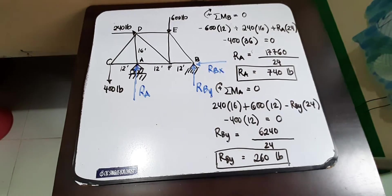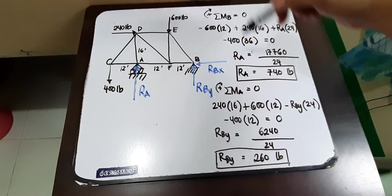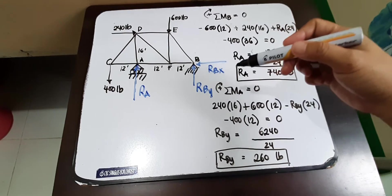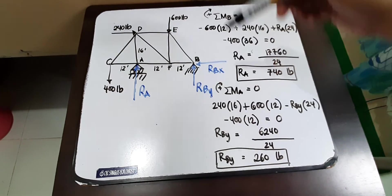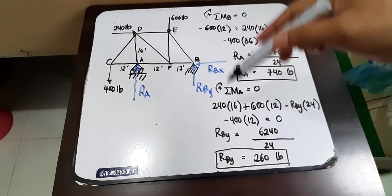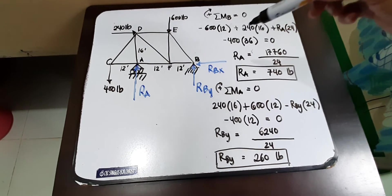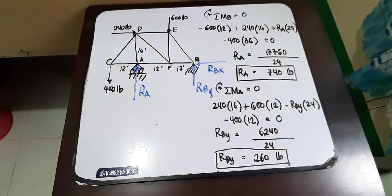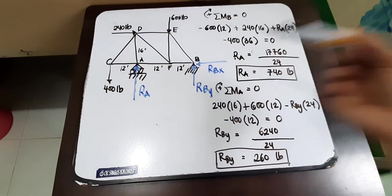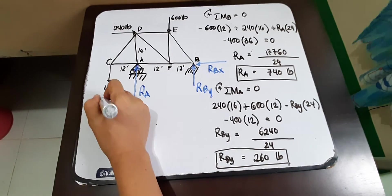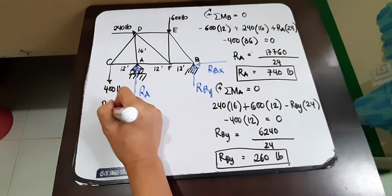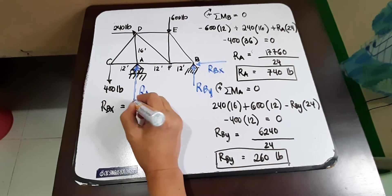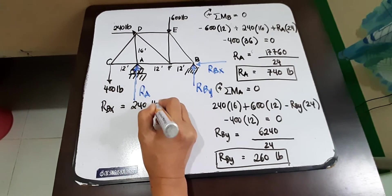Okay, so what would be RBX? If you are going to analyze this whole structure, the only force with the component along the X-axis is 240. So it would be safe to assume that RBX is equal to 240 pounds.